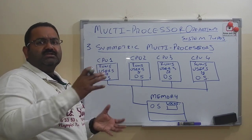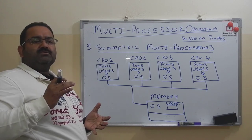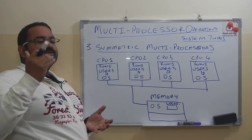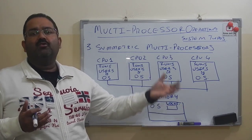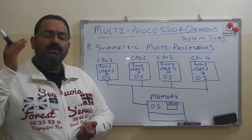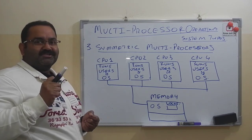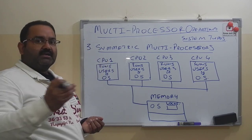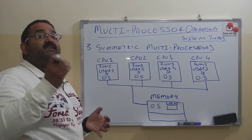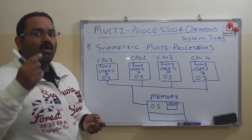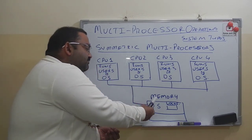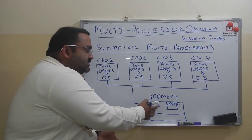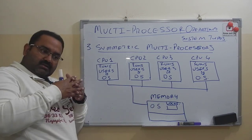This is the approach normally used today. All CPUs have their own copy of the operating system, they run user processes, and whenever they need to make a system call they use their own OS copy. The main drawback is that if CPU 1 and CPU 2 both decide to run the same system call simultaneously, or both try to access the same memory location at the same time, there is a conflict.